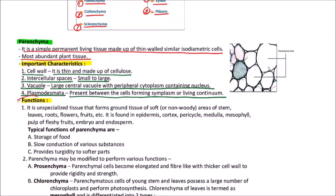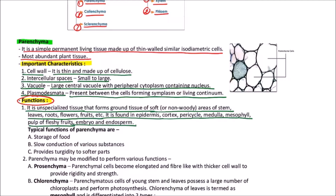Parenchyma is an unspecialized tissue that forms the ground tissue of soft or non-woody areas of stem, leaves, roots, flowers, fruits, etc. It is found in the epidermis, cortex, pericycle, medulla, mesophyll, and pulp of fleshy fruits, as well as the embryo and endosperm. Typical functions of parenchyma are storage of food, slow conduction of various substances — usually radial or lateral conduction — and it also provides turgidity to the soft parts.